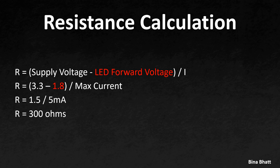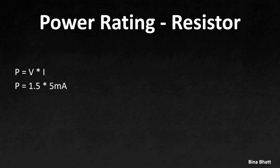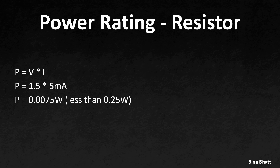Before finalizing the resistor, you also have to consider its power rating. Power rating is the maximum amount of power that the resistor can safely dissipate as heat without getting too hot. Using the formula P = I × V, we substitute 5mA and multiply by the voltage across the resistor. As you can see, this value is certainly below 0.25 watts, so it is well within the operating range and we can go ahead and use this resistor.